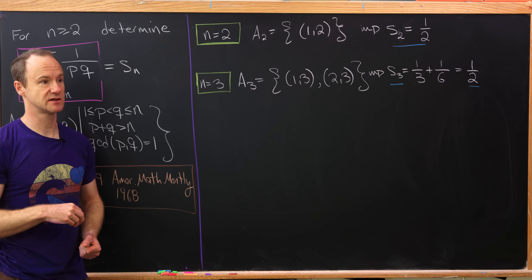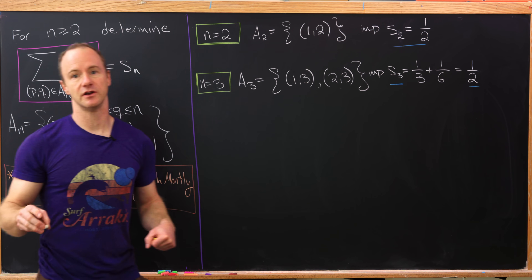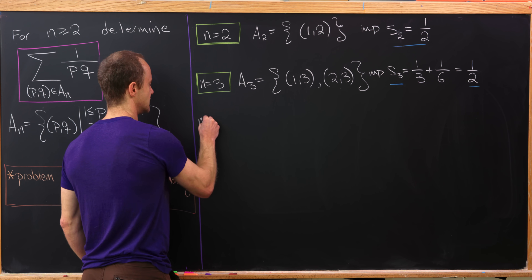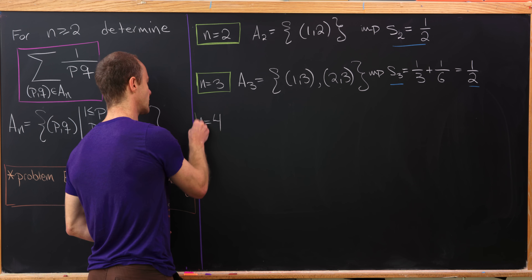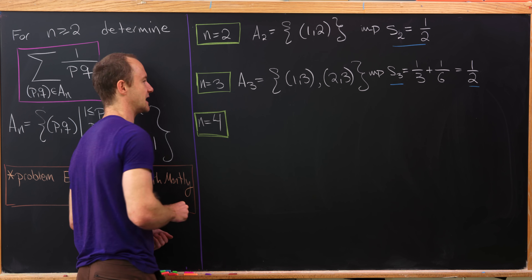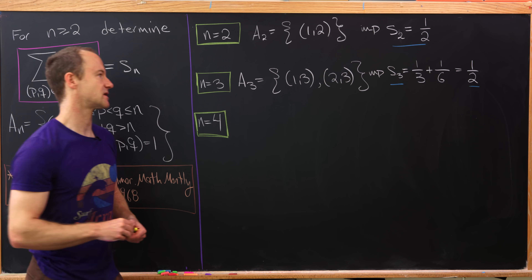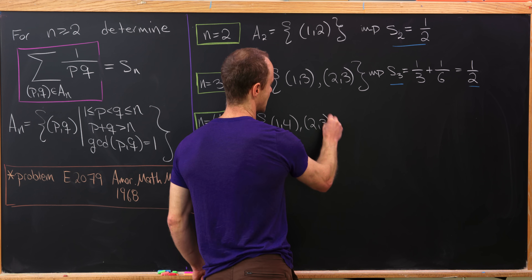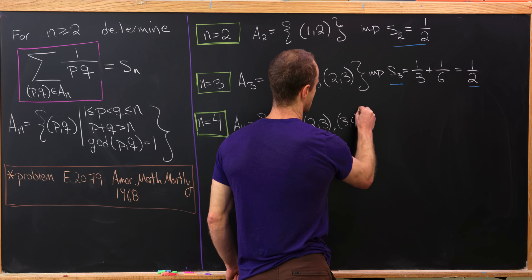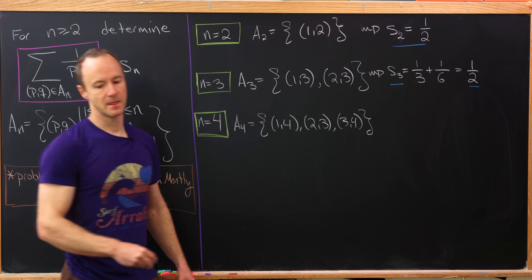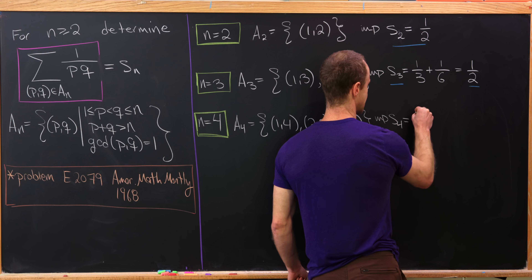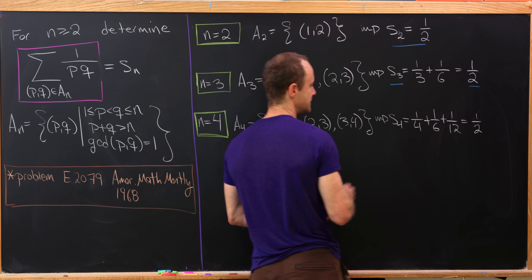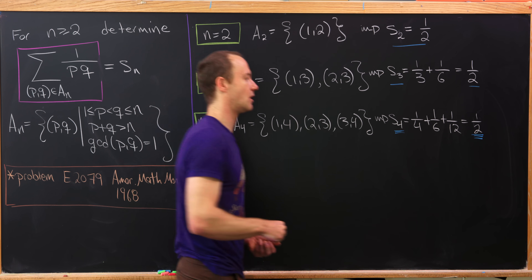The first two sums are both equal to one half — that should raise some suspicions. Generally in these problems, the pattern shows itself pretty quickly, so perhaps the sum is always equal to one half. Let's look at n equals 4. A_4 contains (1,4), (2,3), and (3,4). So S_4 is 1/4 plus 1/6 plus 1/12, which also adds up to one half.